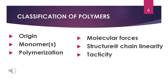Polymers have different behaviors and can be found either naturally or synthetically created. Thus, they can be classified in various ways. The basic classification of polymers can be based on: source of origin, monomers, polymerization, molecular forces, structure or chain linearity, and tacticity.